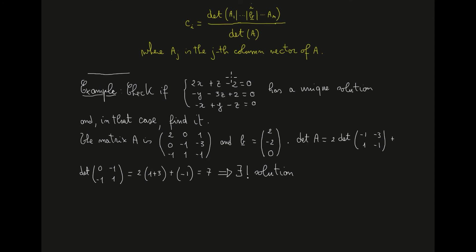There are therefore three unknowns: x, y, and z. In the first equation the coefficients are 2 for x, 0 for y (since y does not appear), and 1 for z — so the first row is 2, 0, 1. For the second row, there is no x so its coefficient is 0, there is negative y giving minus 1, and negative 3z giving minus 3. For the last equation we have negative 1, positive 1, and negative 1.